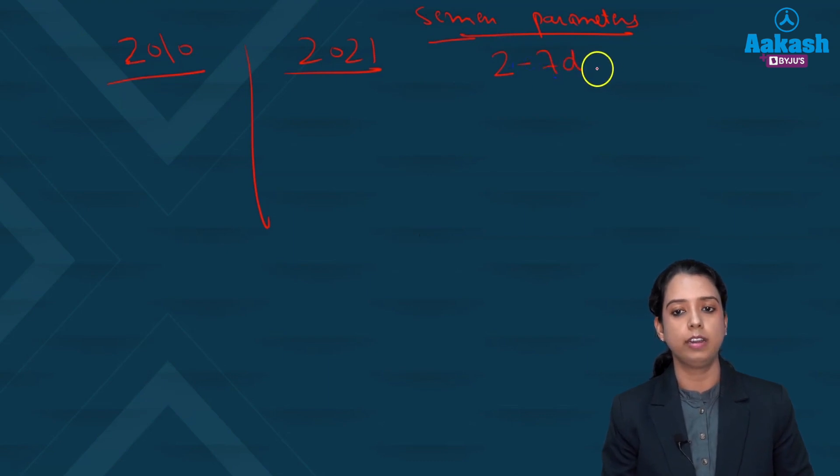Basically the abstinence period which is needed for collection of a semen sample is 2 to 7 days. So write it down. It is not 3 to 5, it is not 3 to 7, it is 2 to 7 days as per WHO. This is the abstinence time. So abstinence should be more than 2 days but less than 7 days.